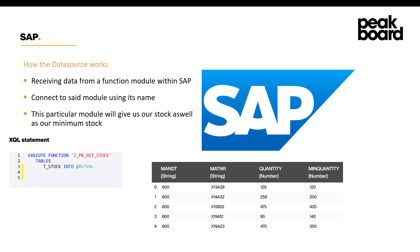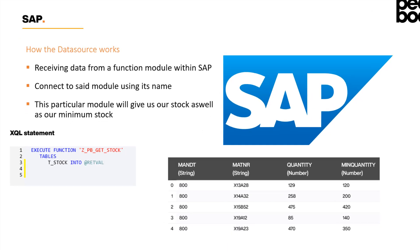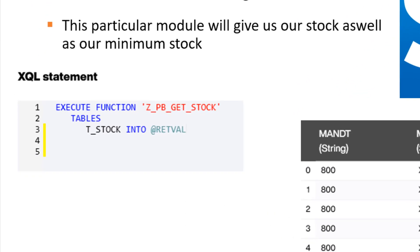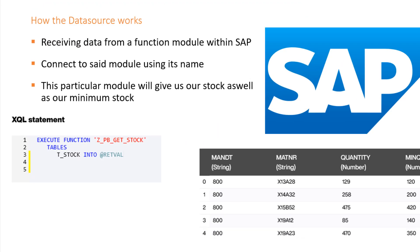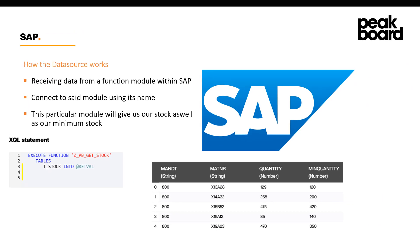Now let's get to our SAP part. We're going to connect to SAP using a function module within SAP. Connect the module using its name — in this case, execute function zpbgetstock, which is our function name. This particular module will give us a stock value as well as our minimum stock.